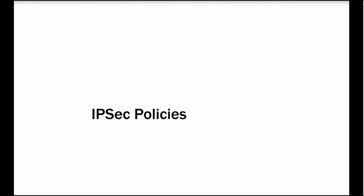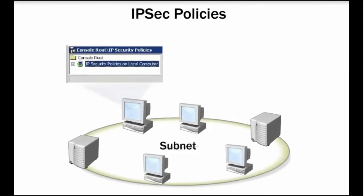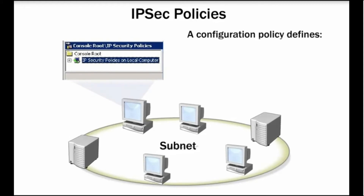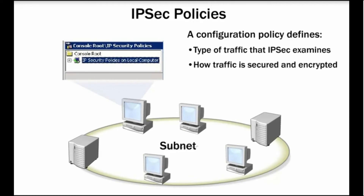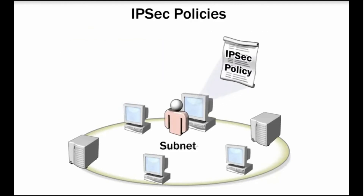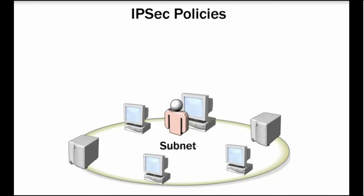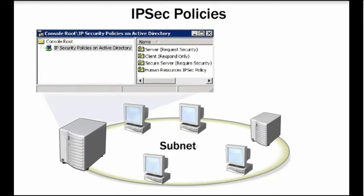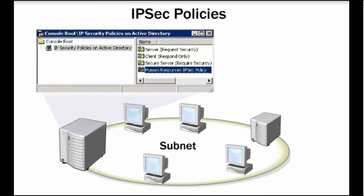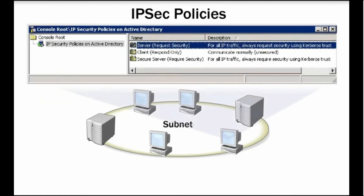You use IPSec policies to configure IPSec. A configuration policy defines the type of traffic that IPSec examines, how that traffic is secured and encrypted, and how IPSec peers are authenticated. You can apply an IPSec policy to a computer locally or by using Active Directory services. If the computer is not part of a domain, you can only configure IPSec policies locally. There are default IPSec policies you can use, or you can create a custom policy. However, you can configure only one IPSec policy at a time for a single computer.